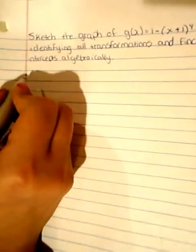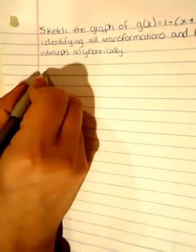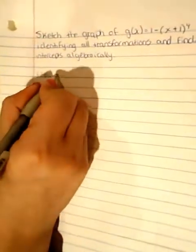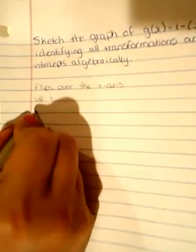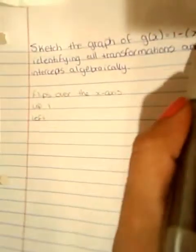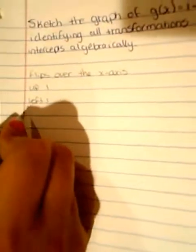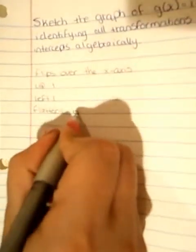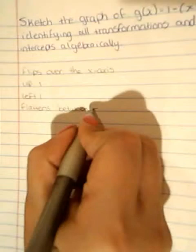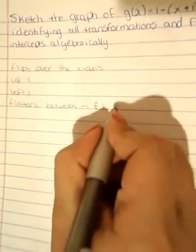First of all we'll do the transformations. So the graph will be flipped over the x-axis and it will shift up one and then to the left by one because we have plus 1 here and plus 1 here too. And then it will be flattened between -1 and 1 by the power of 4.